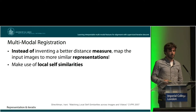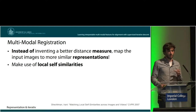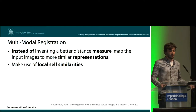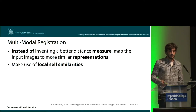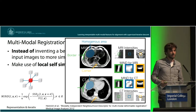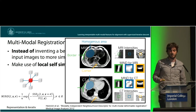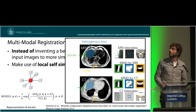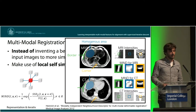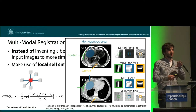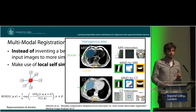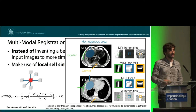What we did was to stop focusing on the metric and instead use a simple similarity measure like the SSD again, drawing inspiration from approaches that first find common representations for input images. In computer vision there are local self-similarities from Shechtman and Irani. Heinrich et al. introduced the so-called MIND descriptor to medical imaging — with this descriptor you can robustly register CT and MRI images by transforming them to a common space where structures like borders or homogeneous areas share a common patch representation, allowing iterative alignment.